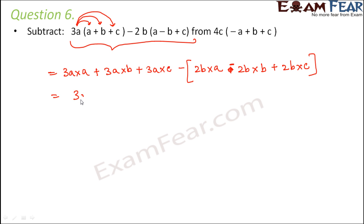So this becomes 3a² + 3ab + 3ac. Now when you remove the brackets, it becomes 2ab + 2b² - 2bc. This would be plus because minus into minus will be plus. Similarly, minus into plus would be minus.